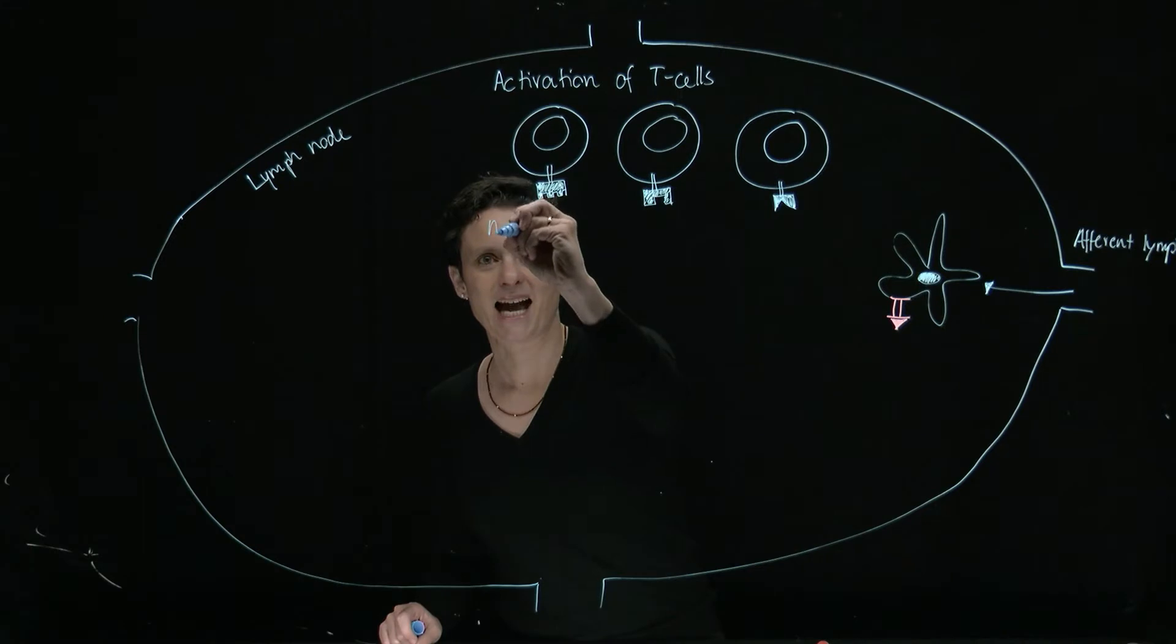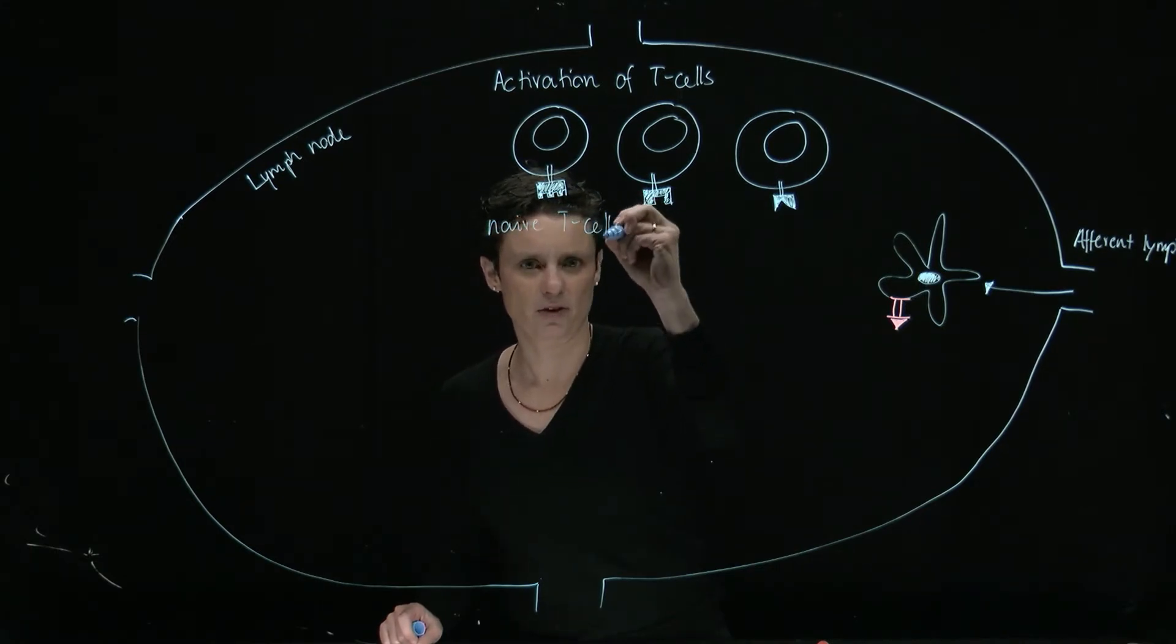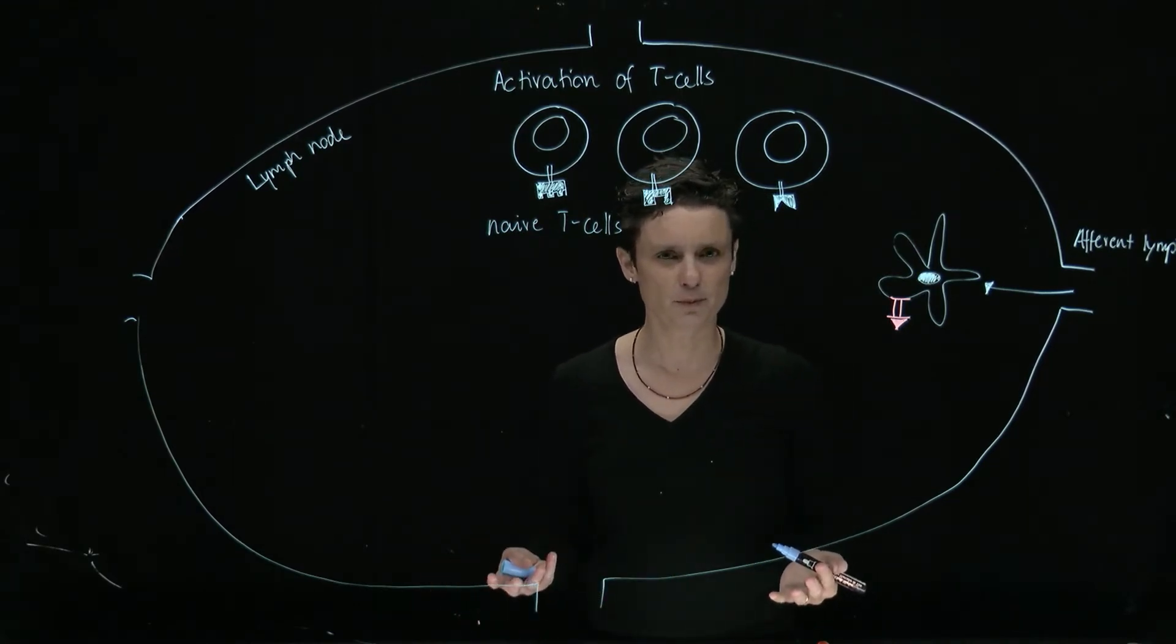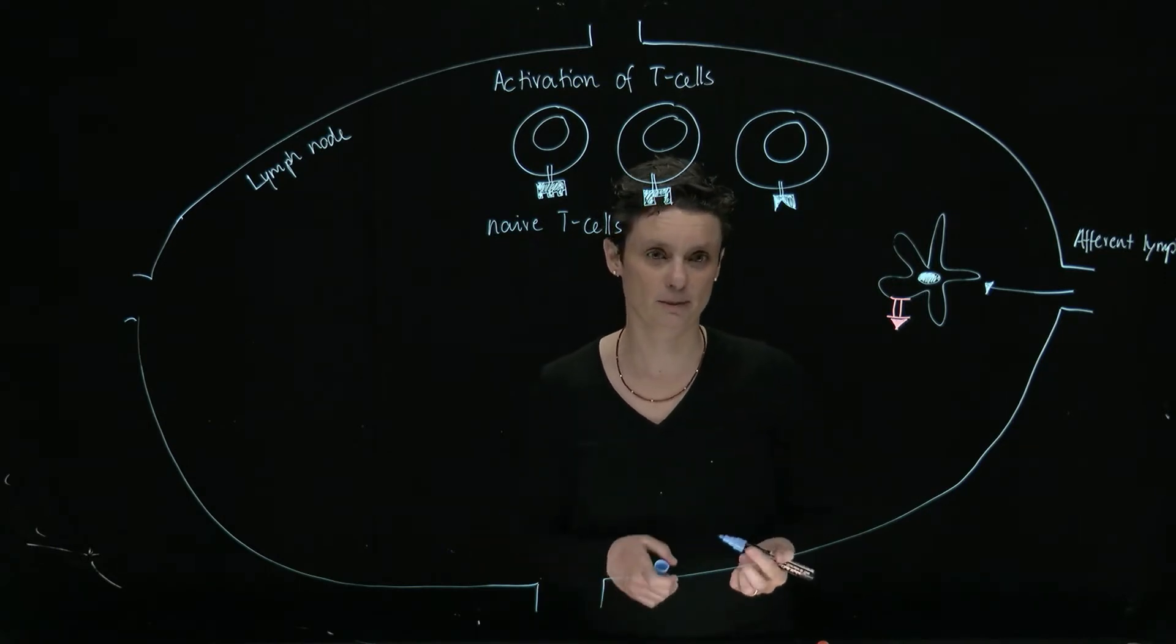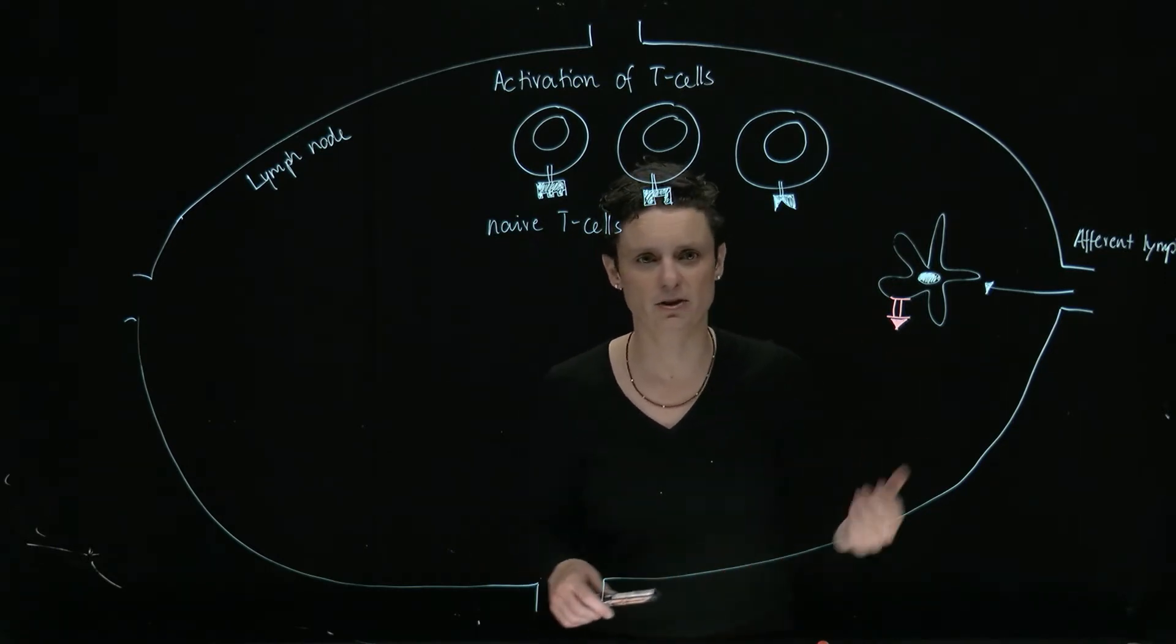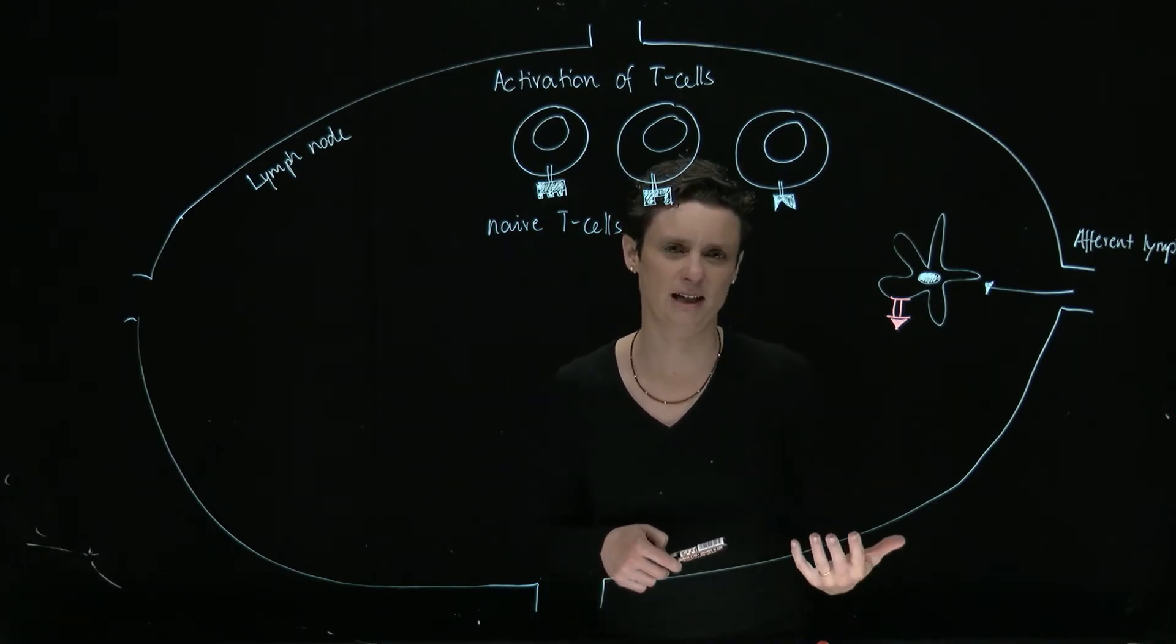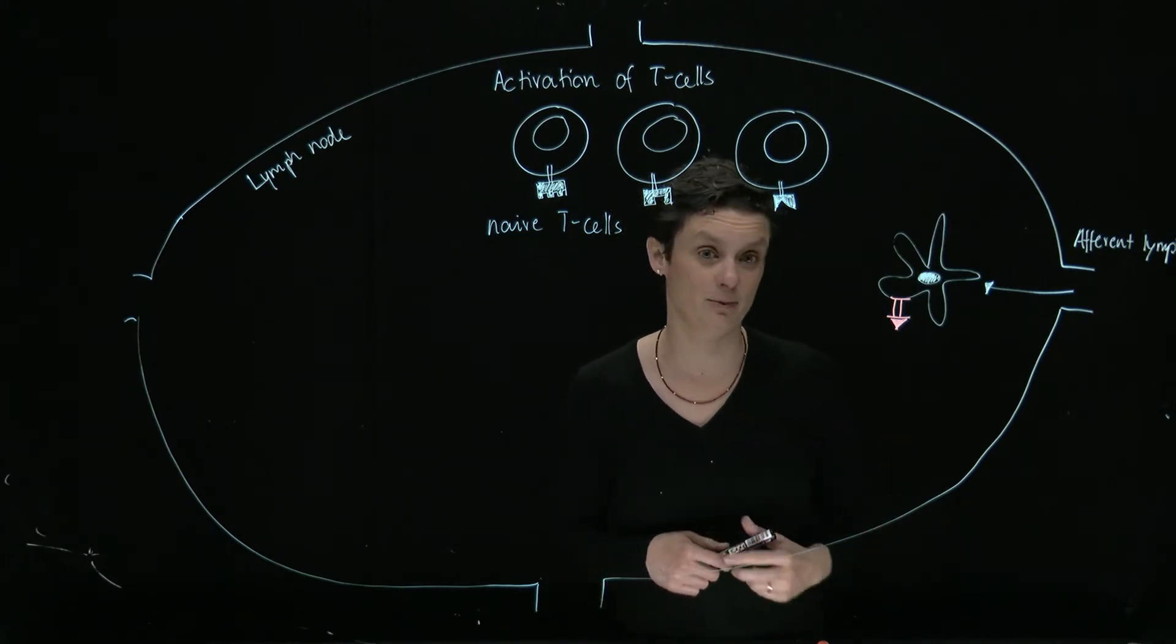So I've drawn here some naive T cells so they are not yet ready to fight an infection. They're just made in the bone marrow, got some education in the thymus and then they're hanging out in the lymph node and really just ready to see if somebody is going to come and activate them because the T cell is kind of our arrogant cell.